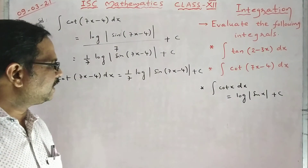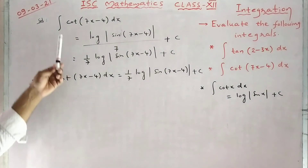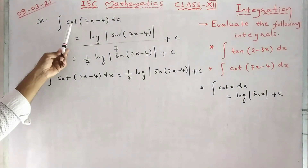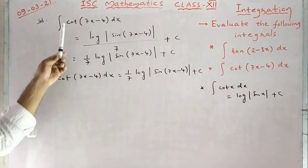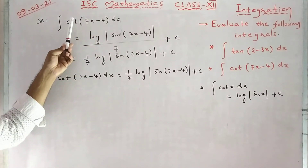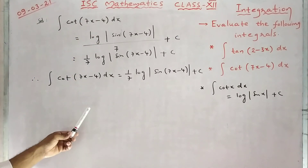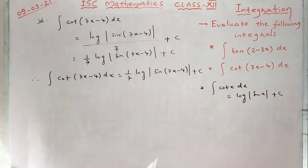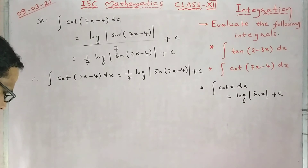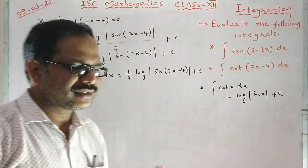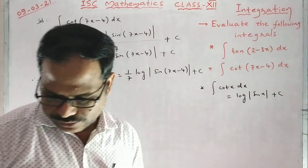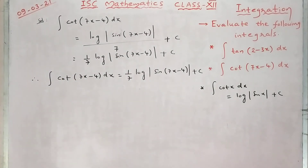Otherwise, as I told you earlier, cot can be written as cos by sin. It looks like f dash x by f of x, so log mod f of x — you will get it directly. That way also you can follow. Hope it is clear. Thank you.